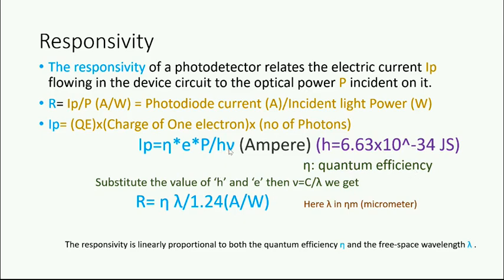Substitute the value of h - h is a constant - and ν you get frequency, that is c/λ. c is velocity of light, 3 × 10^8. Substituting these values you will get R = ηλ/1.24 ampere per watt. One important thing you have to remember always: λ here is in micrometer. Normally λ is given in nanometers - 1550 nanometer or 1300 nanometer or 850 nanometer - you have to convert back to micrometer. So 1550 nanometer you should write 1.55 here in this equation. Here you can see that responsivity is directly proportional to the quantum efficiency and the wavelength.